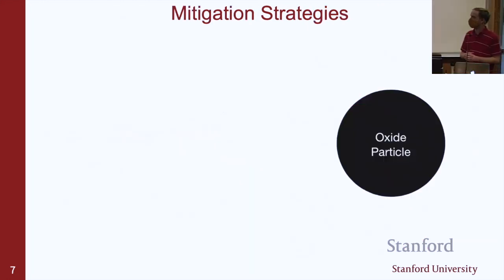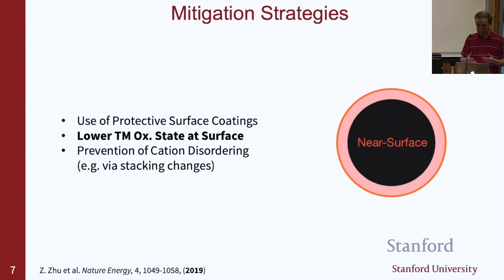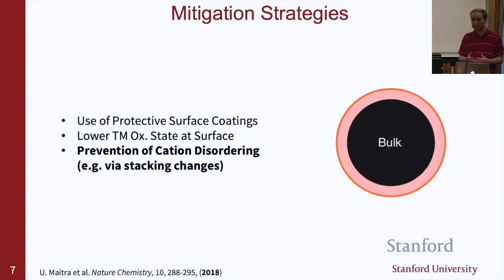Briefly, some possible mitigation strategies. Looking at the oxide particle, the most common approach people have looked at is coating the material with something that blocks oxygen but still allows lithium through. This turns out to be pretty difficult — coated materials from collaborators seem to show the same amount of oxygen loss eventually. Since oxygen release is triggered by very high transition metal oxidation states, having a lower oxidation state right at the surface where the process starts is a potential way to prevent it. Finally, if we can lower the oxygen diffusivity within the bulk — for example, by stopping cation disordering, which has been suggested in sodium-layered materials — that's another possibility.